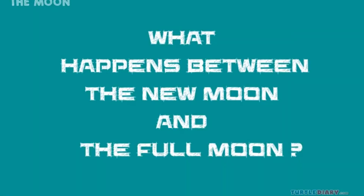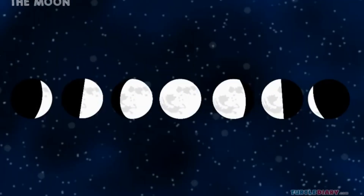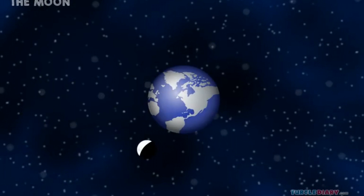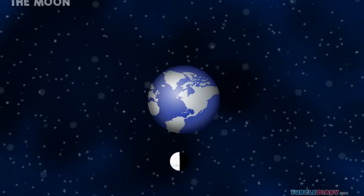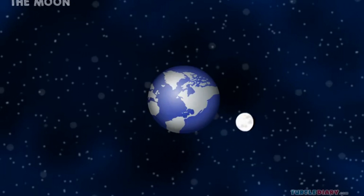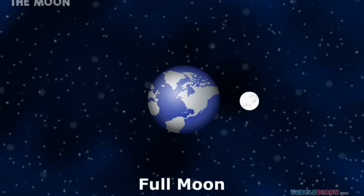What happens between the new moon and the full moon? We see only parts of the moon. First, we see just a little slice — only a little of the sun's light is hitting the moon. It seems to get bigger each night. Then we can see half of the moon lit up. Each night we see more and more of it. Then finally we see the full moon.